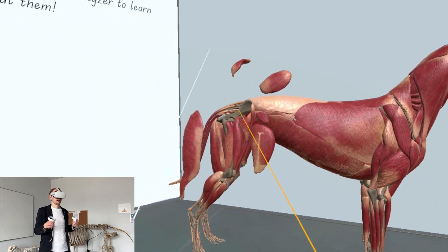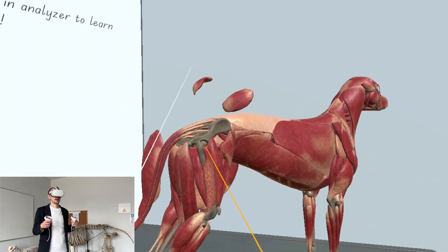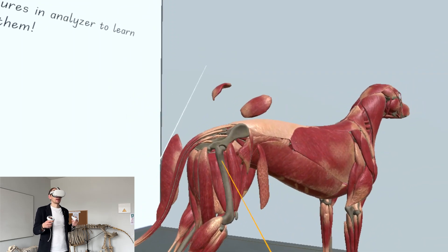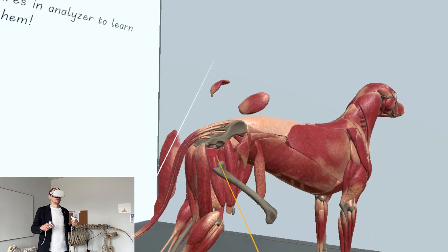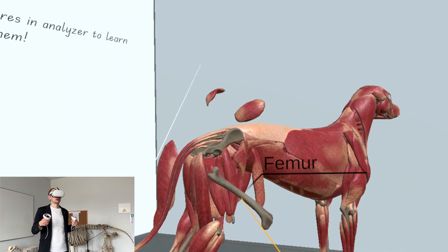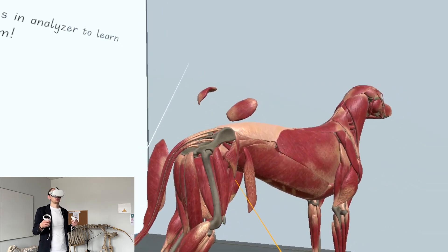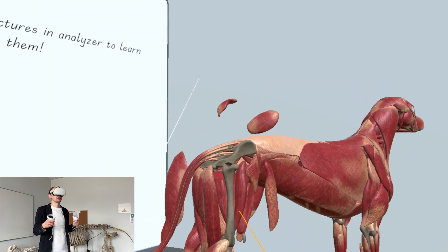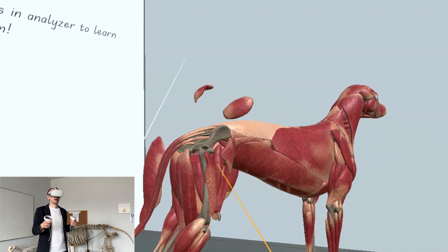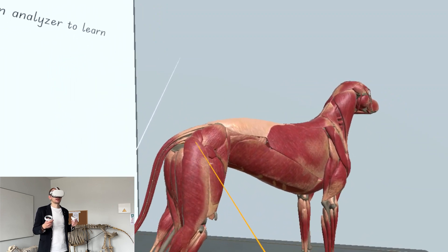We can rotate our dog closer to us, then rotate the leg, and we need to make an incision here. Once we've removed it completely, we need to stitch the vastus lateralis muscle, and that's how we perform this surgery.